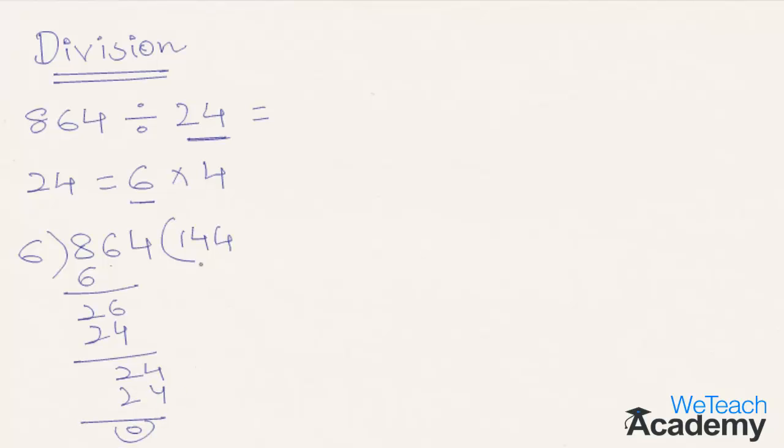Now the quotient which remains is the result for 864 divided by 6. Again divide the remaining result, that is 144, with the next factor, that is 4. So dividing 144 with 4.